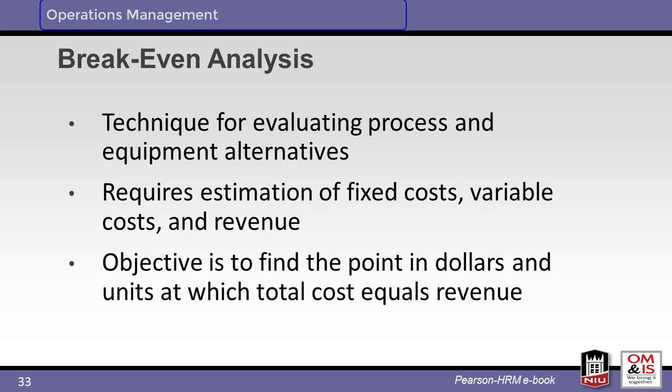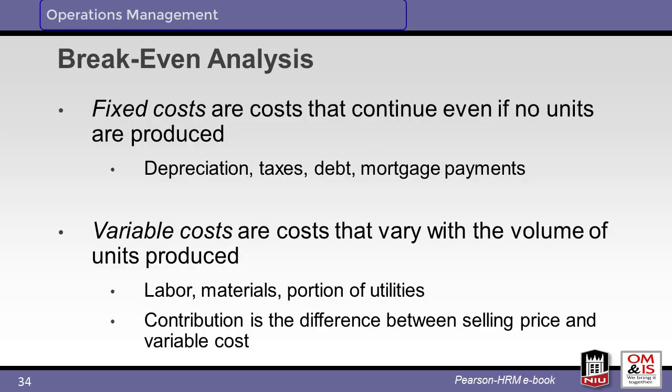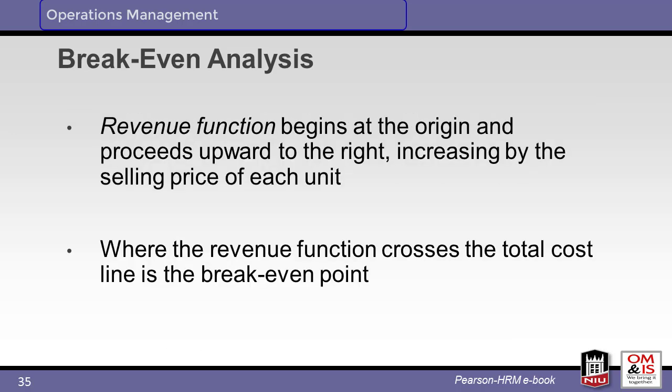Another method for evaluating a process is through breakeven analysis. We start by estimating fixed and variable costs along with revenue. The breakeven point is the point in dollars and units where cost equals revenue. Depreciation, taxes, debt, and mortgage payments are examples of fixed costs, where the cost is independent of the unit volume produced. Variable costs vary with the number of units produced — examples include labor, materials, and utilities. Total cost is the combination of fixed and variable costs. Contribution is the difference between the price and the variable cost.